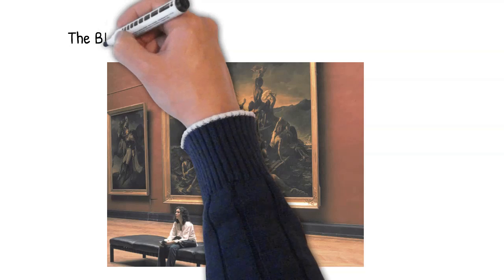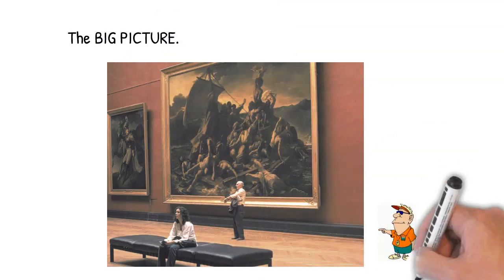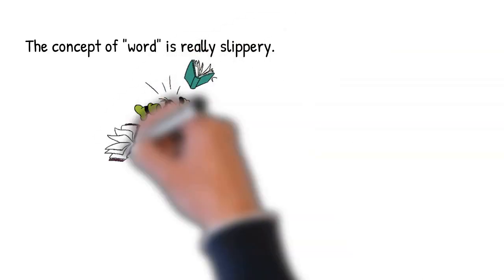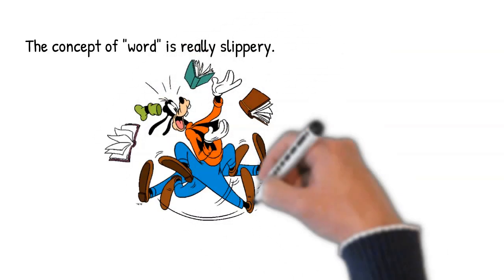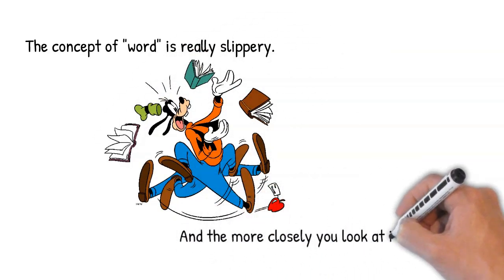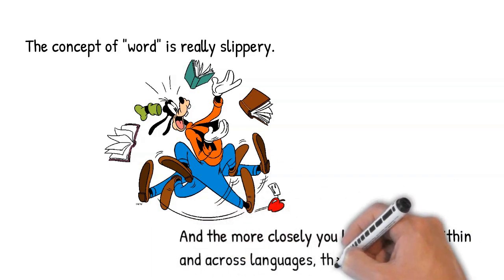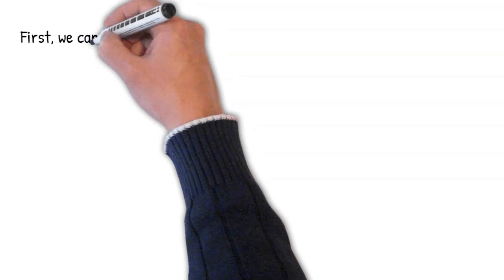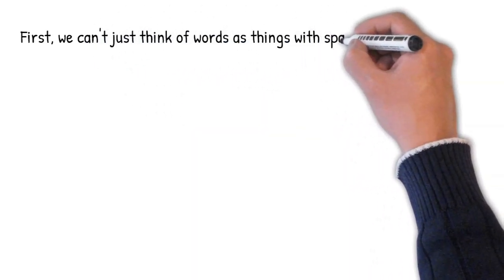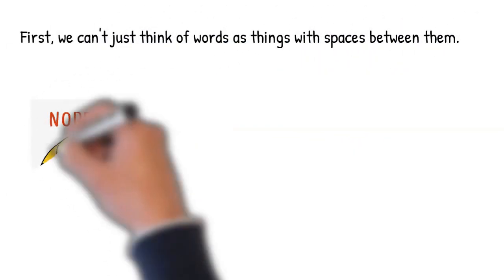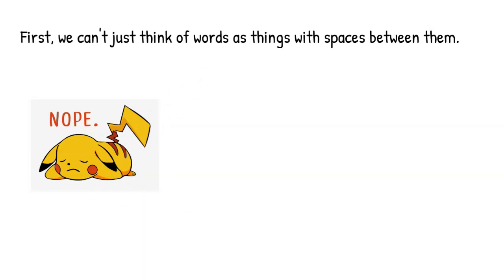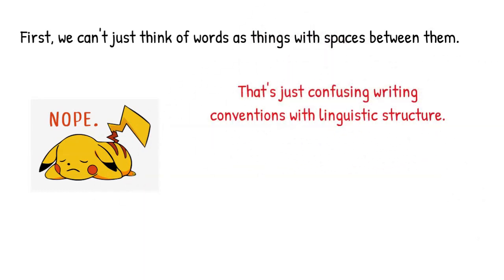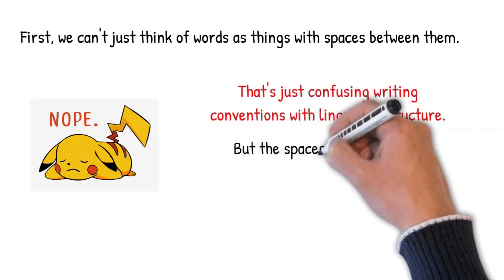Okay then, let's get back to the big picture here. The concept of word is really slippery. And the closer you look, both within languages and across languages, the slipperier it gets. First, we can't just think of words as those things with spaces between them. Because if we do that, we're confusing the conventions we use for writing with linguistic structure. Simply put, those spaces are misleading.